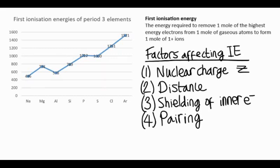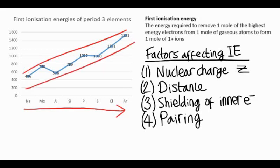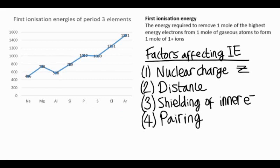So what is the general trend or general pattern in first ionization energy in period 3? Well, as we go from left to right across a period, the graph shows us in general there's an increase in first ionization energy. And we're going to try and explain this general trend firstly. So in general, as you go across a period from left to right, the first ionization energy increases.